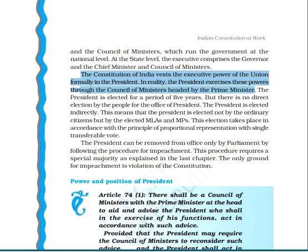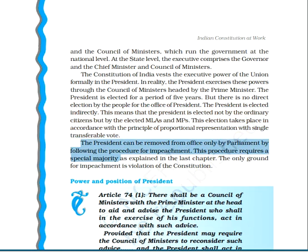However, the president uses these powers on the advice of the council of ministers, whose head is the prime minister. The president is elected for a period of five years — not by ordinary citizens, but by elected members, i.e., MLAs and MPs. The election follows the principle of proportional representation with single transferable vote. The president cannot be removed from office except by parliament through the procedure of impeachment, which requires a special majority, and only when there is a violation of the constitution.